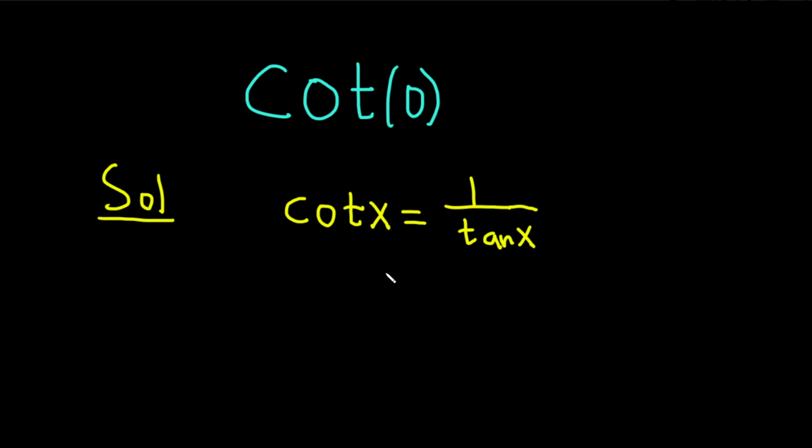And so we have the cotangent of 0. Basically, you would just go in here and replace all of the x's with the number 0. So we get cotangent of 0, and that's equal to 1 over the tangent of 0. And this is where the error occurs. Because tangent of 0 is equal to 0, you get 1 over 0, which doesn't make any sense.